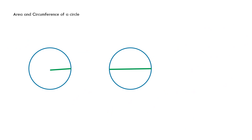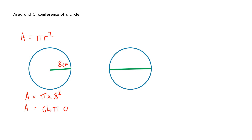Let's look at how we work out the area and circumference of a circle. The area of a circle is π r squared — that's pi times r squared. We need to be careful with order of operations since squaring is an index. For example, if the radius is 8 cm, area equals π times 8 squared. Since 8 squared is 64, the area is 64π cm².